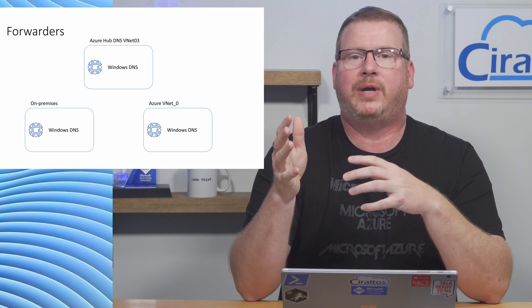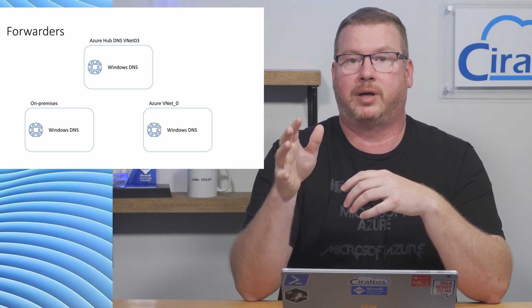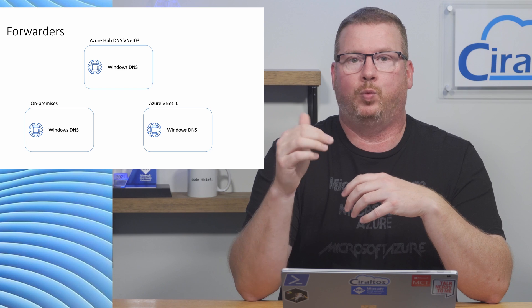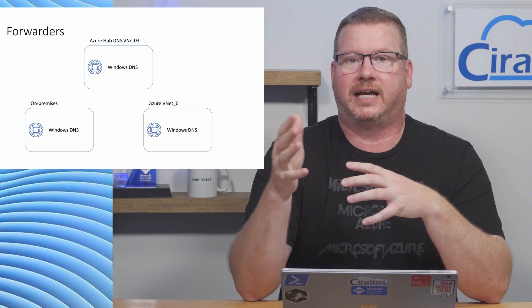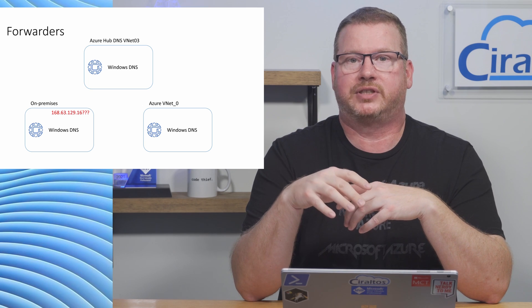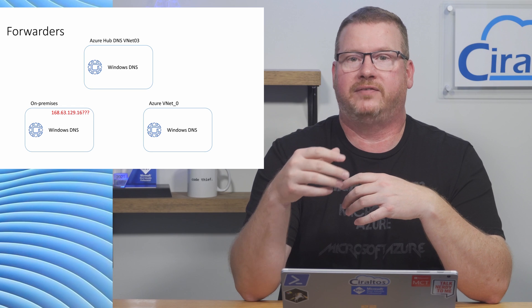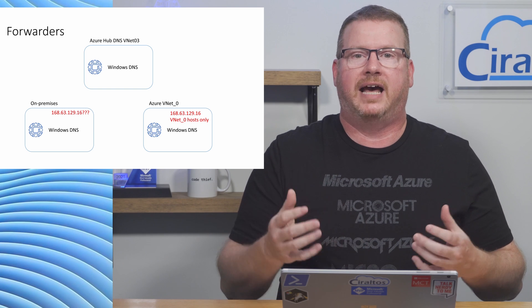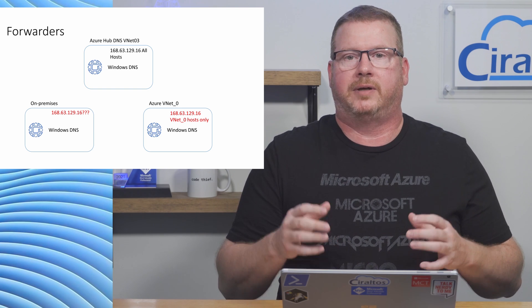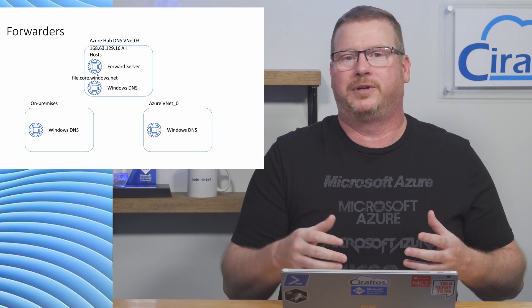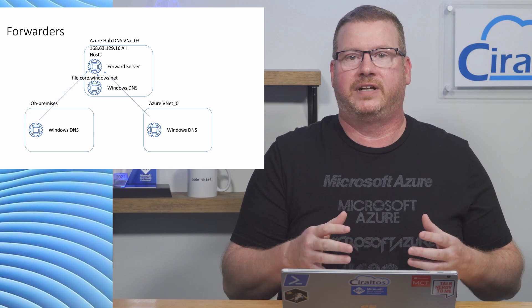So why do we need the extra DNS server — why not just forward all requests to the wire server IP? Let's say we had Windows DNS set up for our on-premises network and two VNets in Azure, one of them being the DNS hub. If we simply set Windows DNS to forward requests for file.core.windows.net to the wire server IP, requests from on-premises servers would fail — the wire server IP is only available from the Azure VNet. Also, VNet Zero would only be able to resolve hosts on that VNet, not from other VNets. Only DNS queries from VNet 3 would be able to resolve all of the private endpoints. By using a forwarder on the DNS hub, all private endpoints configured to use the hub will be resolved.